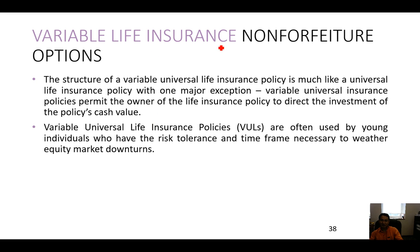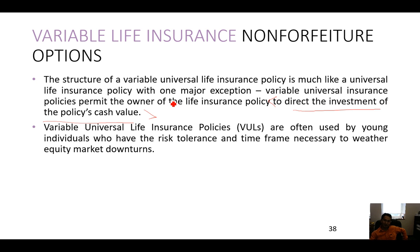Let's talk about variable life insurance. The structure of a variable universal life insurance policy is much like a universal life policy, with one major exception: variable universal life permits the policy owner to direct the investment of the cash value. In whole life and universal life, they tell you your rate of return — maybe 2-3% a year. With variable life insurance, you pick what you want to invest in and get that return.